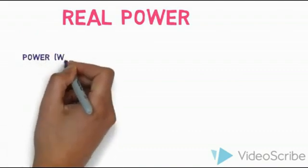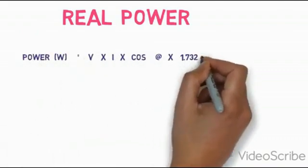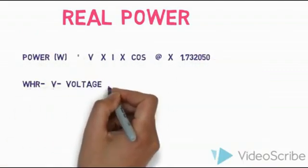To calculate the three phase power, P is equal to V times I times root 3.